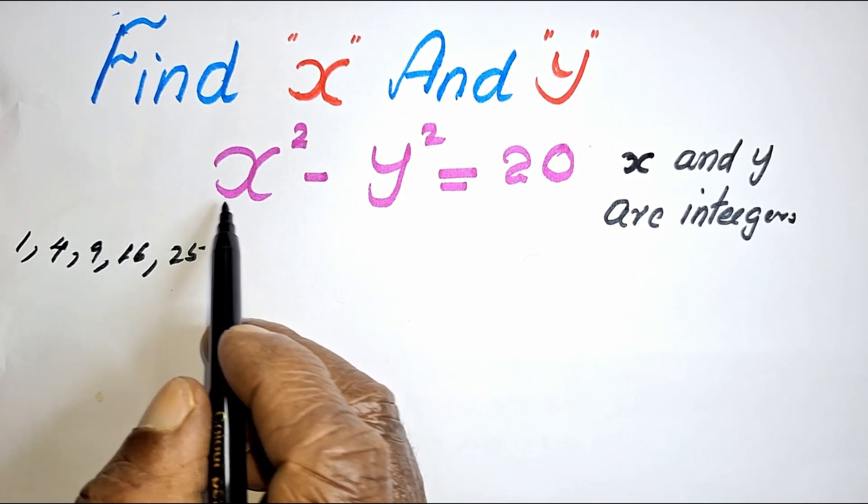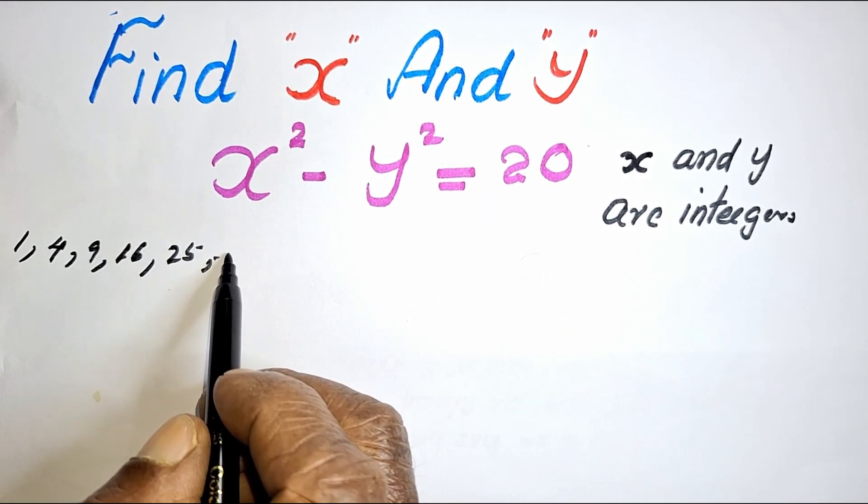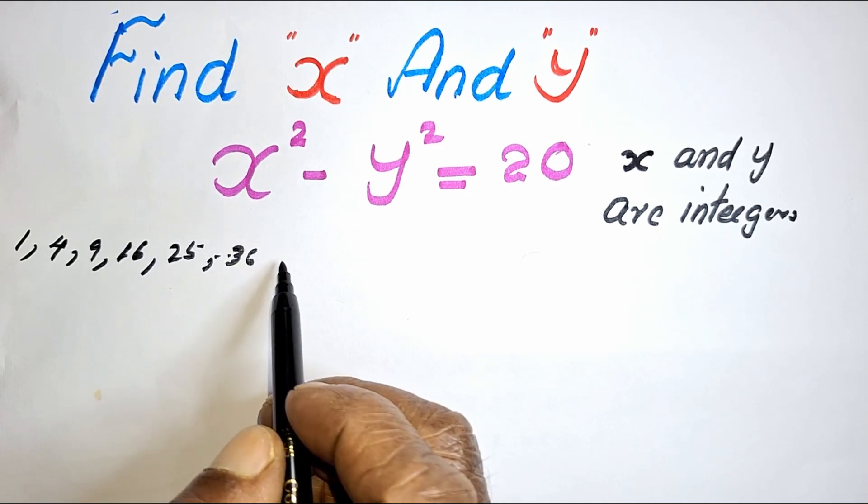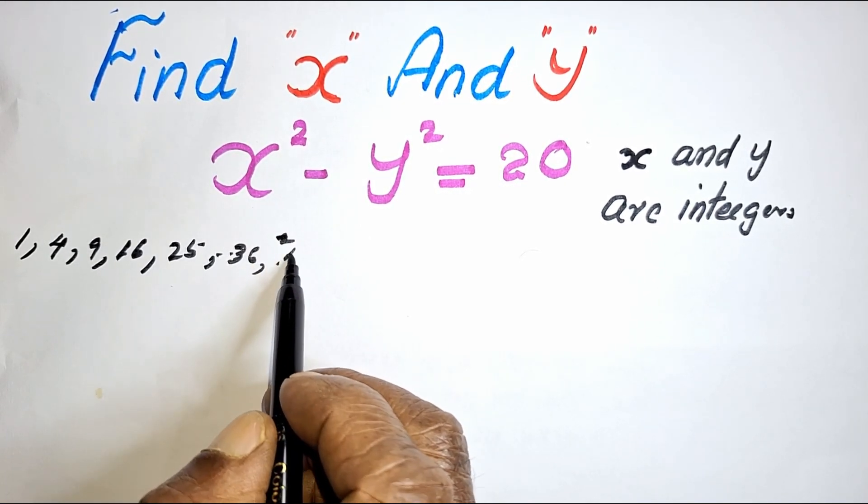Out of these, there must be a difference of 20. As you go on, you can find 36, 49, like that.